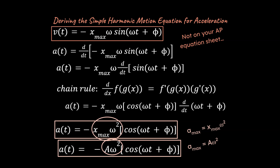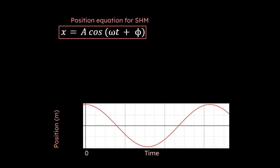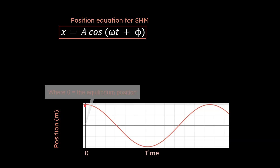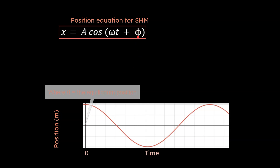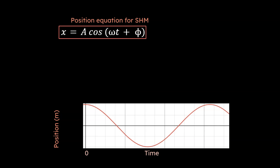Let's take that information and look at it graphically. If we plot a position versus time graph based on this equation, we fundamentally get a cosine function — modified by all the variables inside, but that's the basic shape. Our assumption here is that you have a displacement to begin with at the start of the problem. If you're starting from zero, you need to use phi, the phase constant, to adjust for that change.